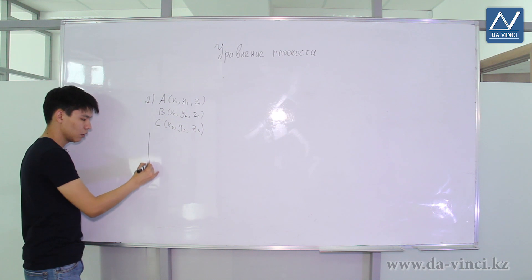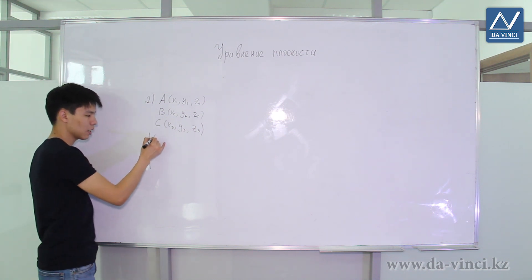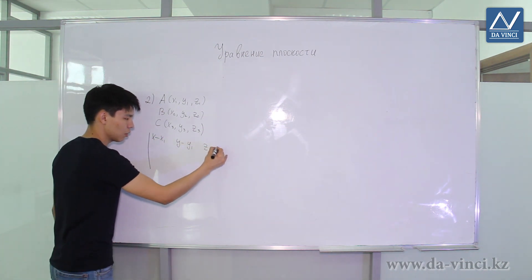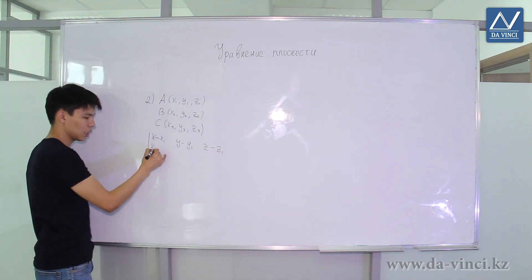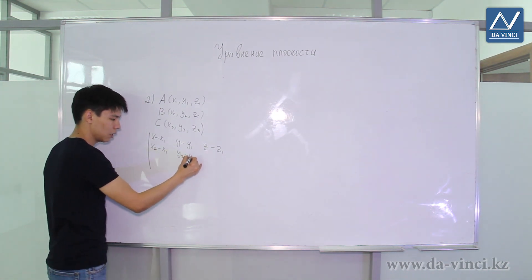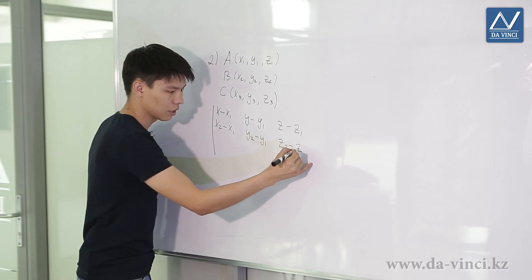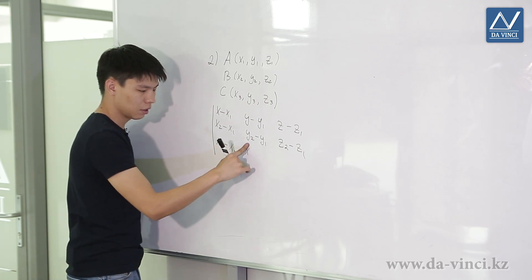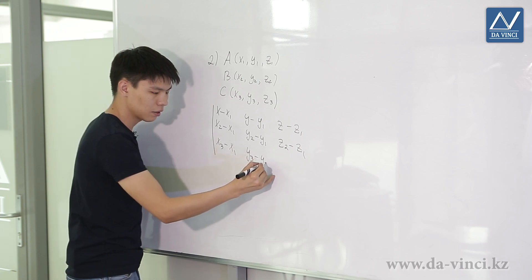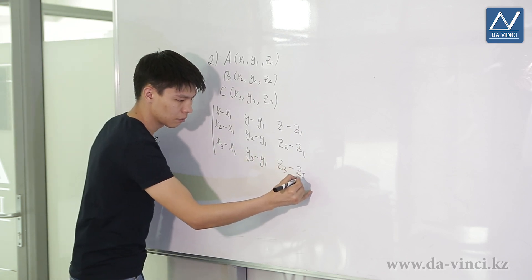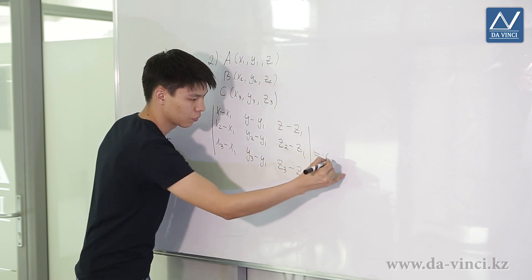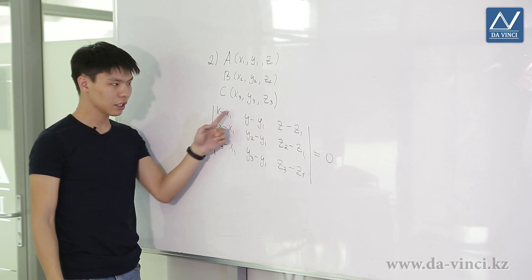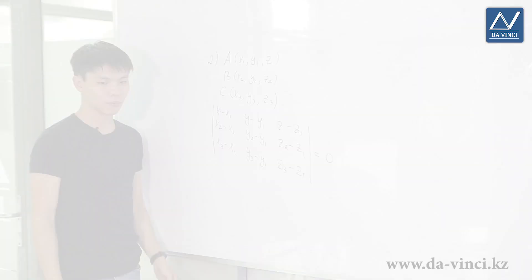It turns out that we can write the equation of this plane using the determinant. The first row is (x minus x1), (y minus y1), (z minus z1). The second row is (x2 minus x1), (y2 minus y1), (z2 minus z1). And the last row is (x3 minus x1), (y3 minus y1), (z3 minus z1), is equal to 0. Calculating the determinant and transforming gives a relation with respect to x, y, and z, and this ratio gives us a plane passing through these 3 points.